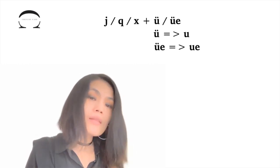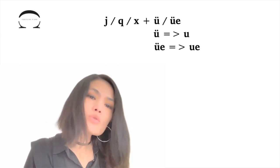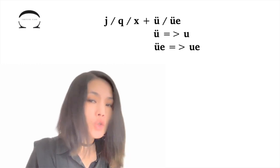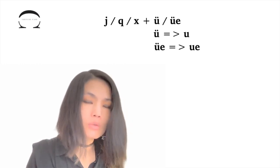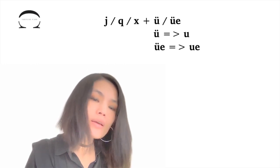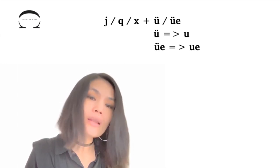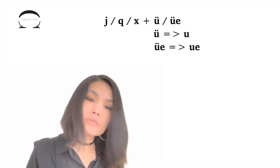The reason behind this is: In addition to the letter ü, N and L can also pair with the letter u. So it becomes necessary to use the two dots to differentiate whether the letter u or the letter ü is being used.